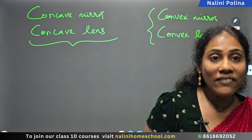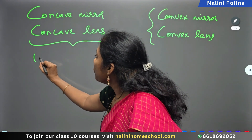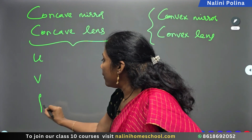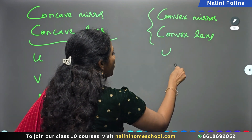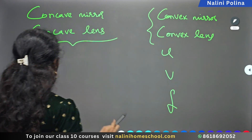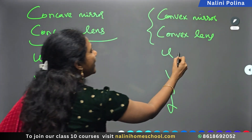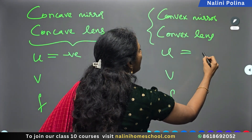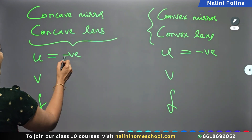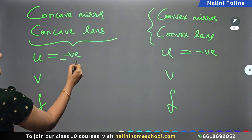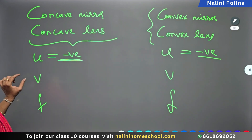Here we have u, v, and f — and in both cases u is always negative, no matter what lens or mirror you are using. u is always negative. The real problem is with v and f.